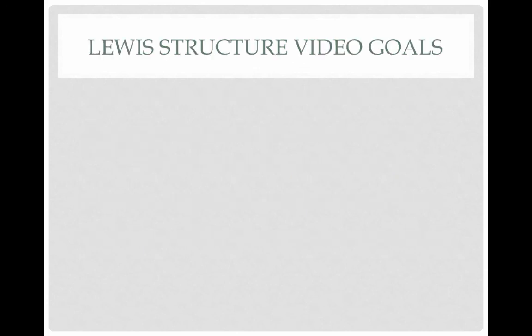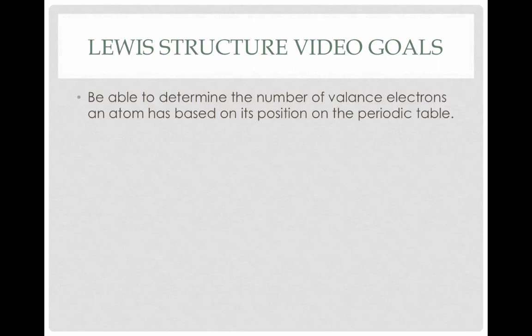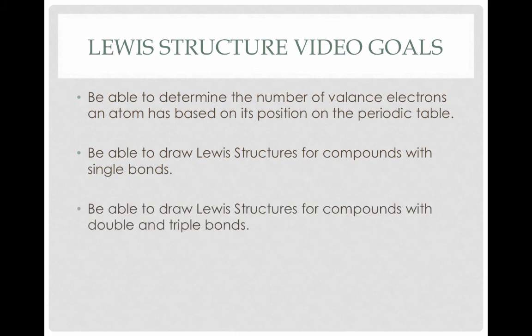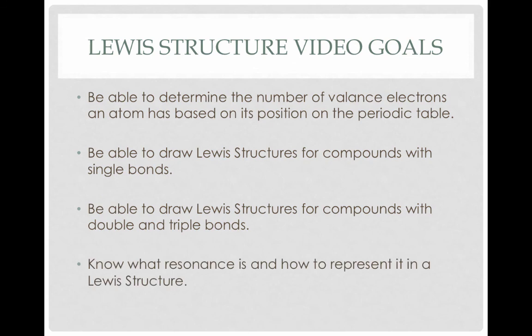That brings us to the end of this video. Let's review our goals. We learned how to determine the number of valence electrons based on an atom's position on the periodic table, how to draw Lewis structures for compounds with single bonds and with double and triple bonds, and what resonance is and how to represent it in a Lewis structure.